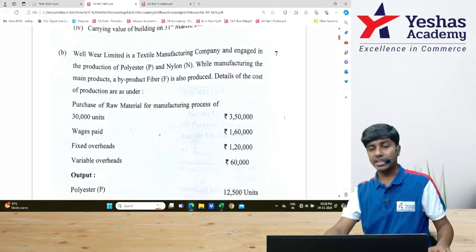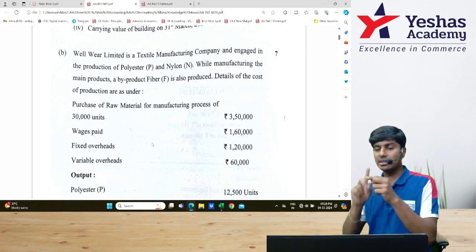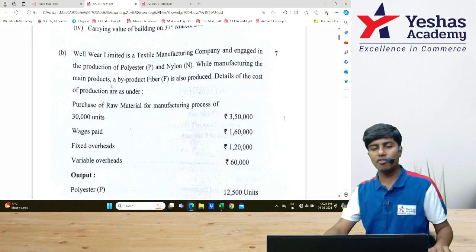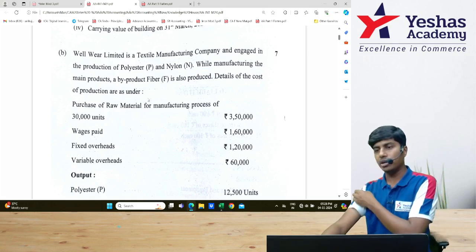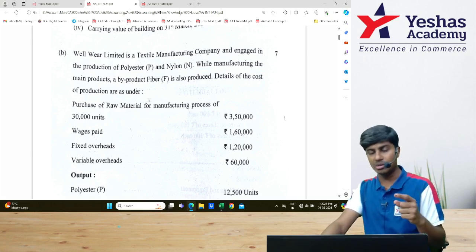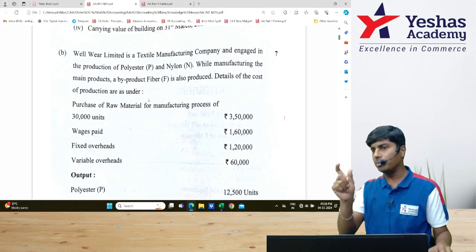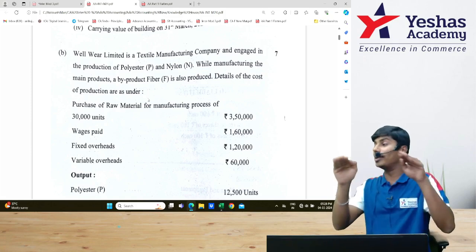Weir Limited is a textile manufacturing company engaged in manufacture of three items: polyester and nylon. Polyester and nylon are both main products or joint products. While manufacturing the main products, byproduct fiber is also produced. Byproduct fiber will be valued at net realizable value, that is selling price minus selling expense. That NRV will be deducted from the cost of production of joint products before allocating it.